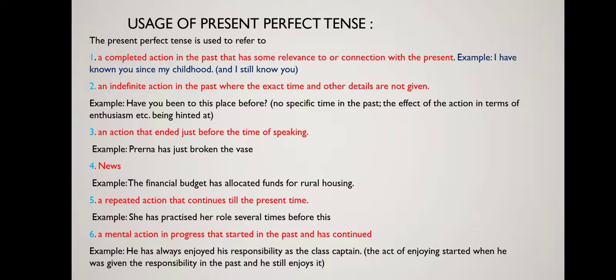Present perfect tense is used to refer to a completed action in the past that has some relevance to or connection with the present. That means the action started in the past but is connected to the present. For example: 'I have known you since my childhood and still I know you.' So 'I have known you' is in present perfect tense.